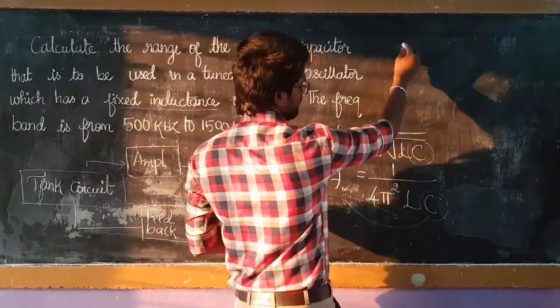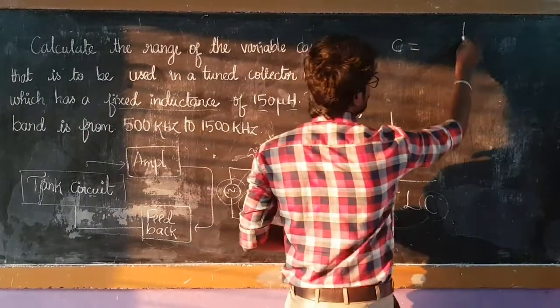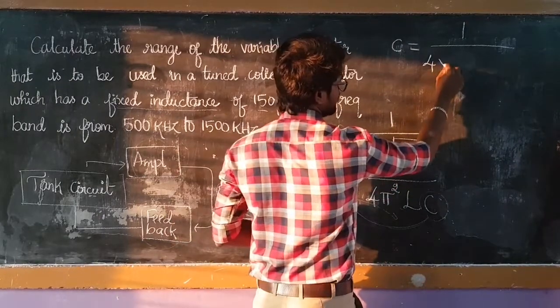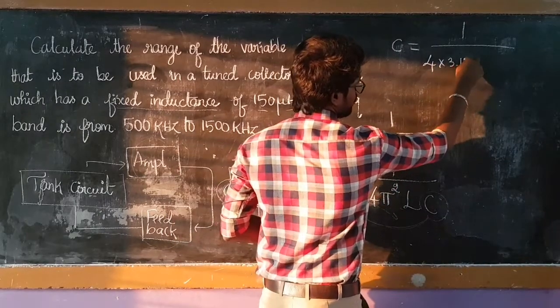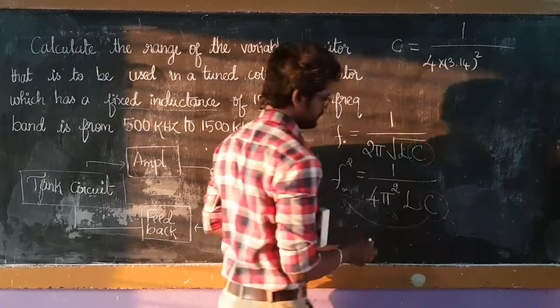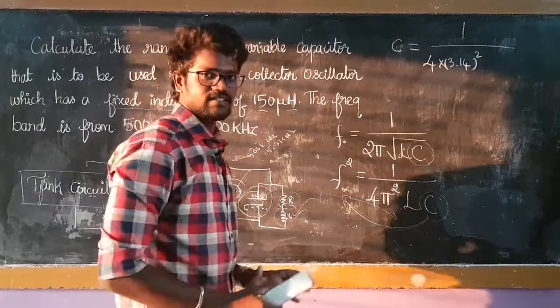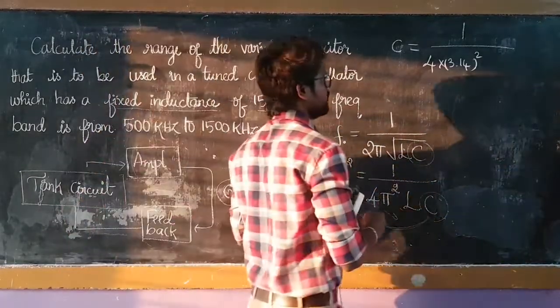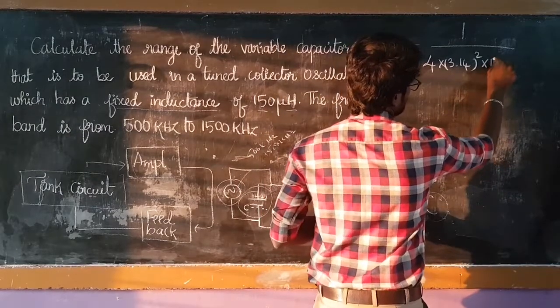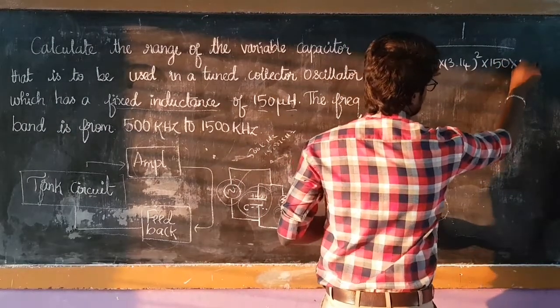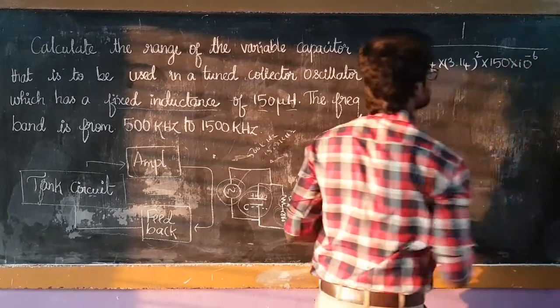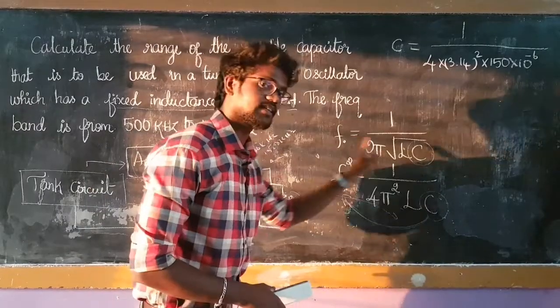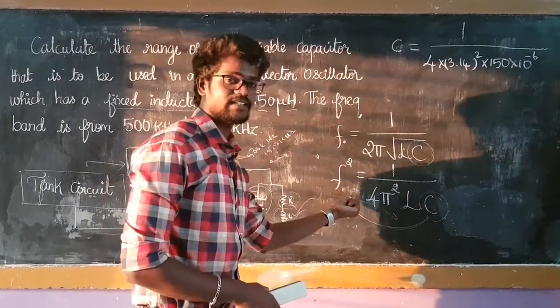So C is equal to 1 by 4π². π is 3.14 squared, L is fixed at 150 into 10 to the power minus 6. Suppose we start with 500 kilohertz.